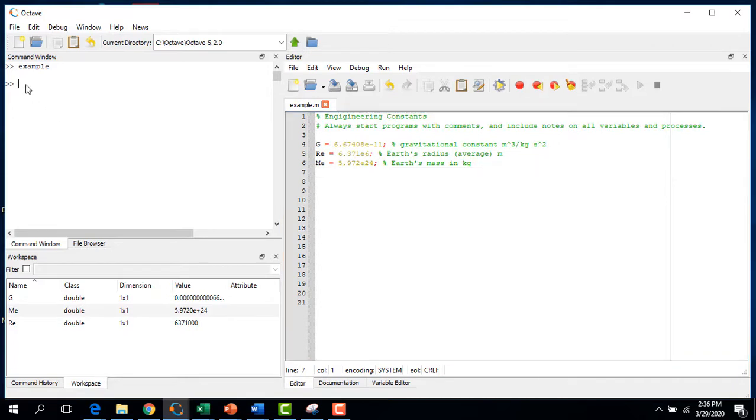Another thing you can do if you want a quick variable list is type W-H-O or for more details W-H-O-S. We'll give you a nice list pretty much everything that's also in your workspace, but that's a convenient little thing to have.